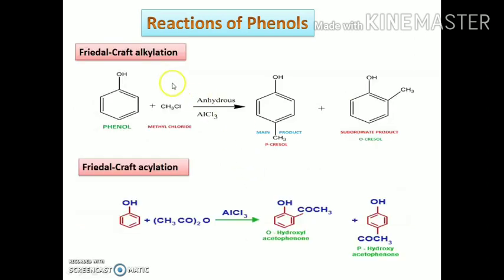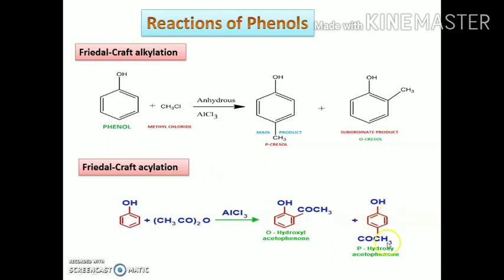The next reaction is Friedel-Crafts alkylation. When phenols are treated with alkyl halide in the presence of anhydrous aluminum chloride, it undergoes Friedel-Crafts alkylation forming para and ortho isomers, with para products being more stable due to better symmetry. Similarly, in Friedel-Crafts acylation, phenols treated with acetic anhydride in the presence of aluminum chloride give ortho-hydroxyacetophenone and para-hydroxyacetophenone, with para being the major product.